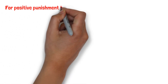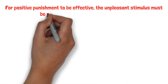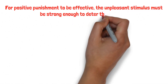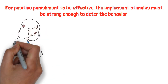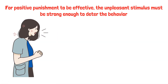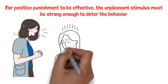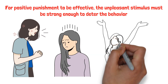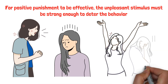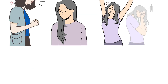For positive punishment to be effective, the unpleasant stimulus must be strong enough to deter the behavior, and it must be applied consistently whenever the behavior occurs. Over time, the individual learns to associate the behavior with the negative outcome, leading to a decrease in the behavior.